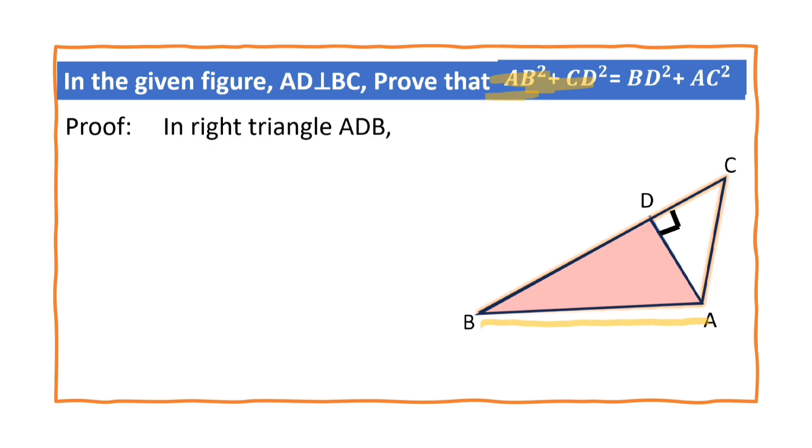So, in triangle ADB, AB is the hypotenuse, isn't it? So, AB² = BD² + AD². Why? By Pythagoras theorem.